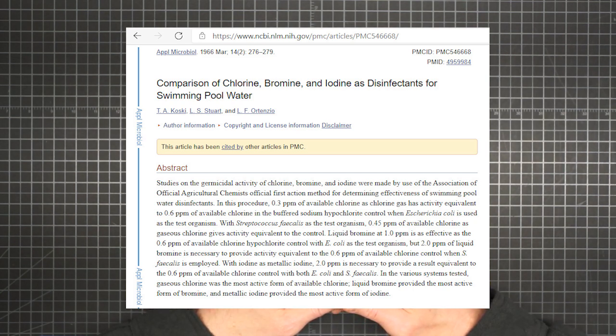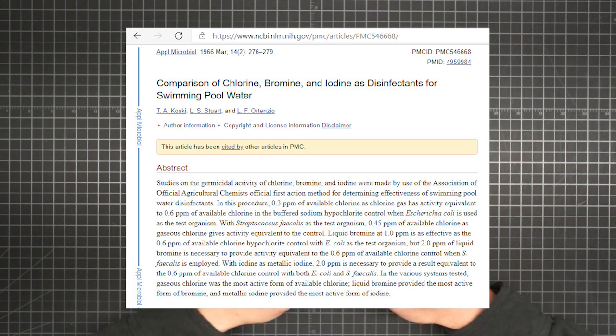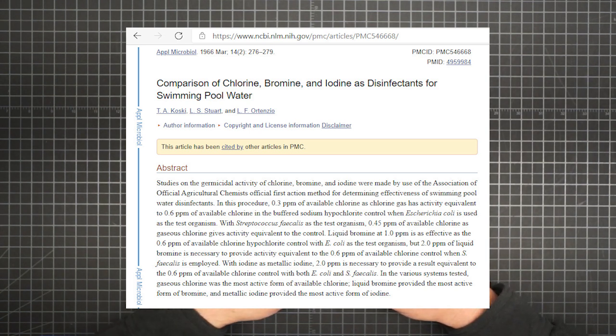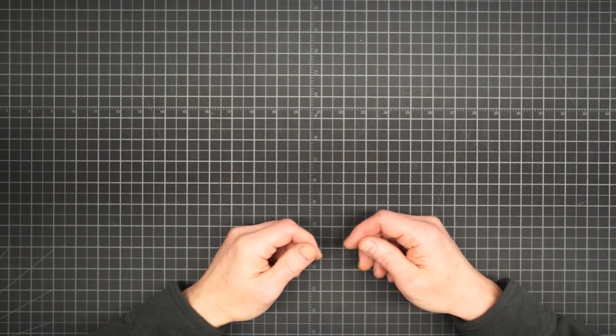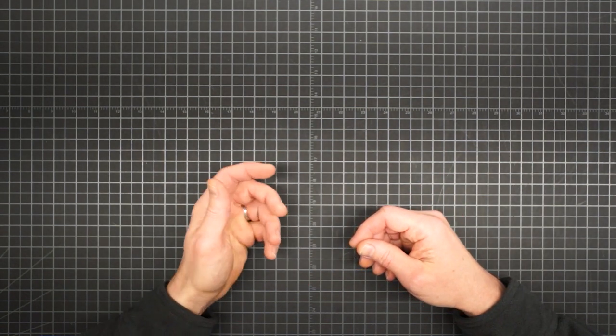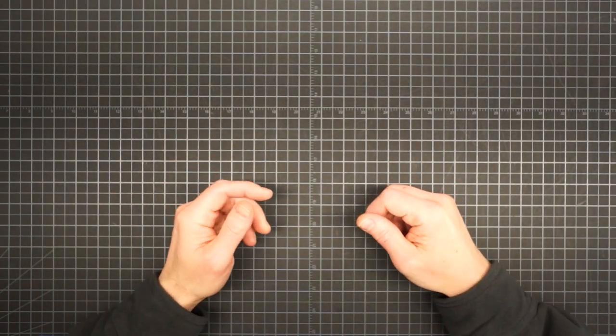A study published in Applied Microbiology compared chlorine and iodine as disinfectants for swimming pool water. In it, they looked at disinfection of two test organisms: E. coli and Streptococcus faecalis. It took two parts per million of iodine to provide a result equivalent to just 0.6 parts per million of free chlorine. At over three times the effectiveness, it takes less than a third the dose. And that means less chemical to drink for the same disinfection.